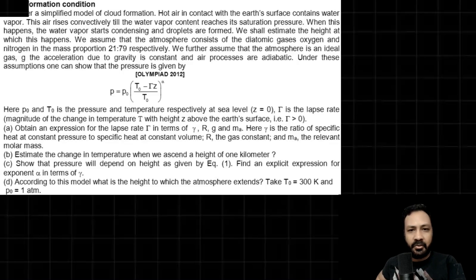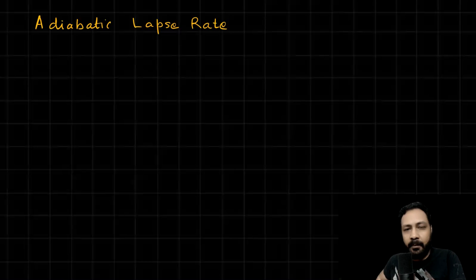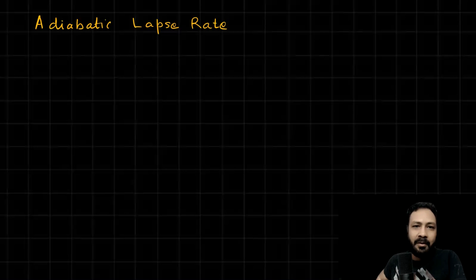As we go up in the atmosphere, the temperature of the air decreases with altitude, and that rate of decrease of temperature with height is called the lapse rate. Now, what is adiabatic lapse rate? Take any open air mass system and assume the process to be adiabatic. Then the lapse rate is called the adiabatic lapse rate. So basically, adiabatic lapse rate is the rate of decrement of temperature with height, assuming an adiabatic process.